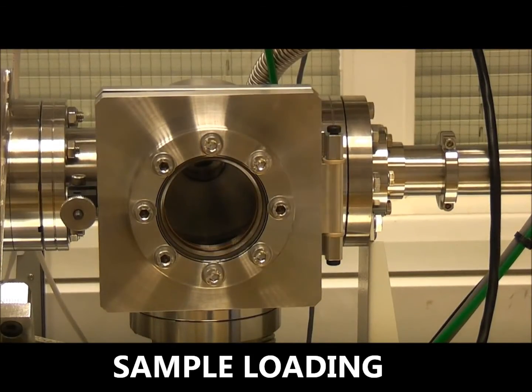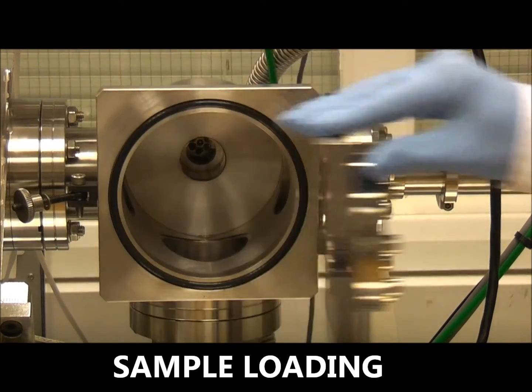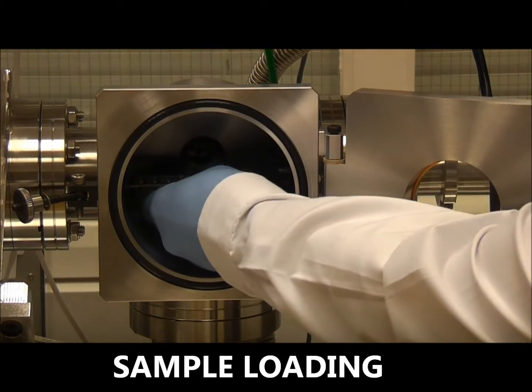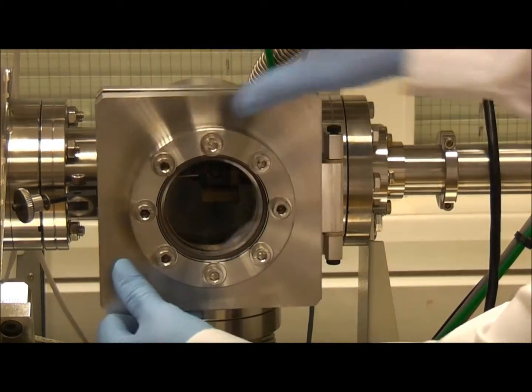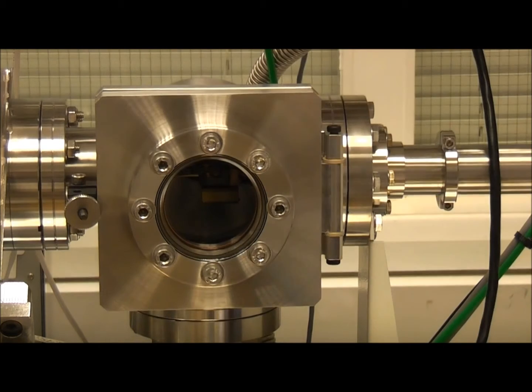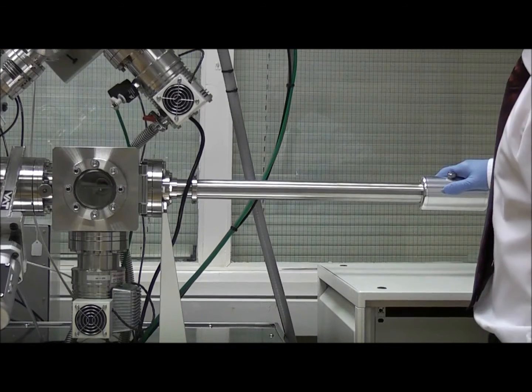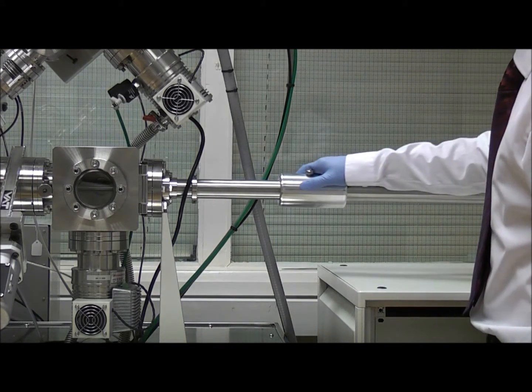Samples are loaded into the chamber via a load lock system. A bayonet fit secures the holder to the transfer arm and after evacuation the sample is transferred to the chamber where it positively locks onto the manipulator.